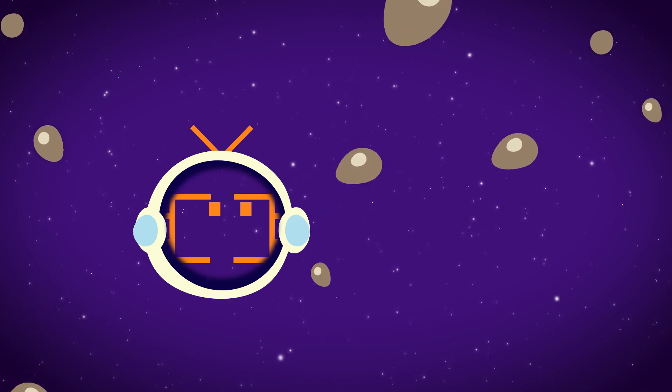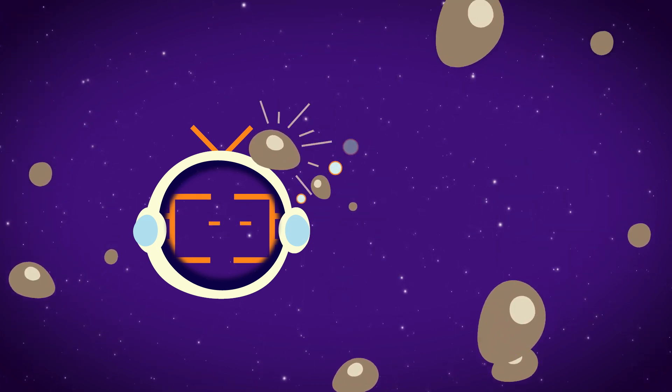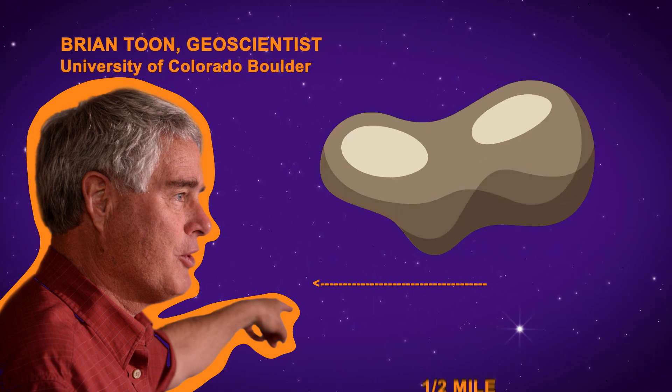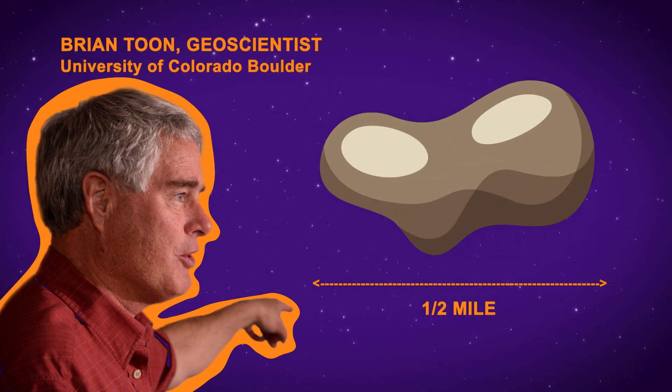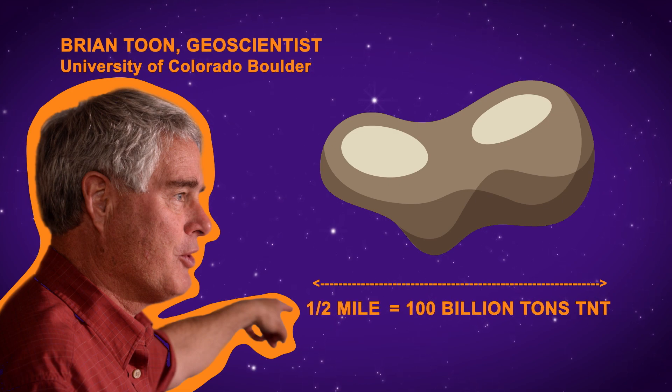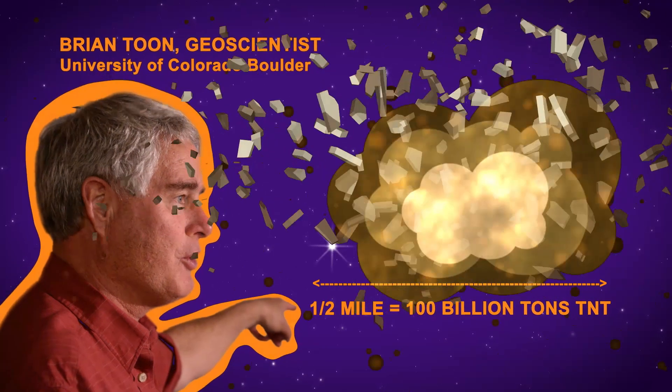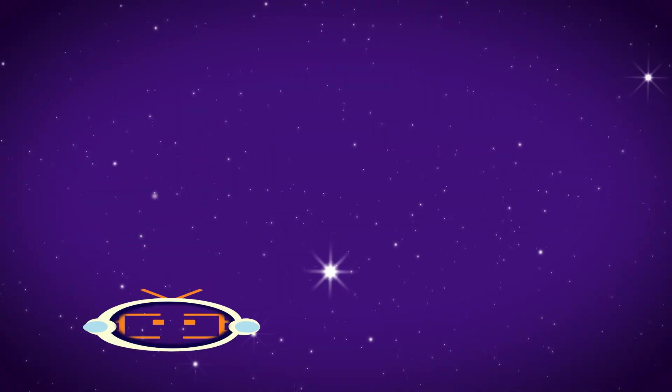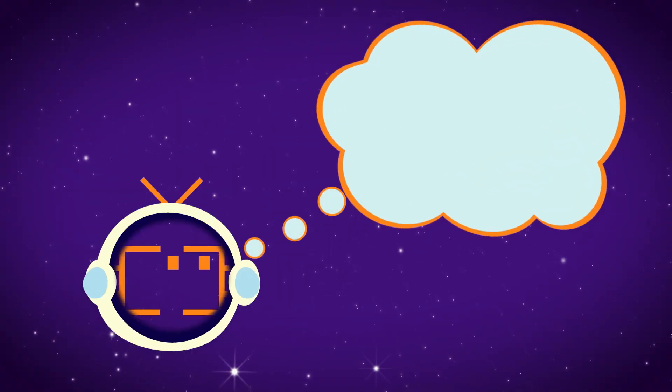Scientists have been looking at potential asteroid impacts for years. University of Colorado geoscientist Brian Toon figures one rock about a half a mile wide can do a lot of damage and cause widespread earthquakes, releasing the energy equal to 100 billion tons of TNT. But even that wouldn't be completely catastrophic.